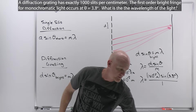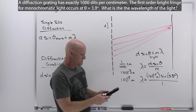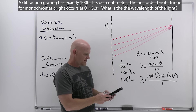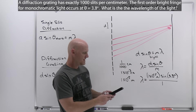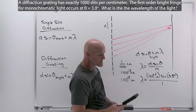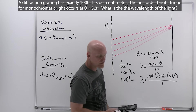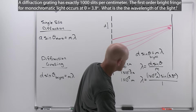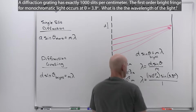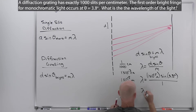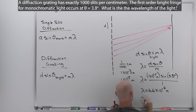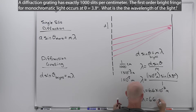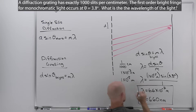It's a straightforward plug and chug. Plugging in 1e negative 5 times the sine of 3.8, we get 6.627 times 10 to the negative 7 meters, which to 2 sig figs is 6.6 times 10 to the negative 7 meters — or 660 nanometers, as you might see on a multiple choice test.